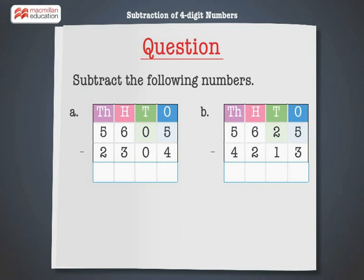Subtract the following numbers: 5,605 minus 2,304 and 5,625 minus 4,213.